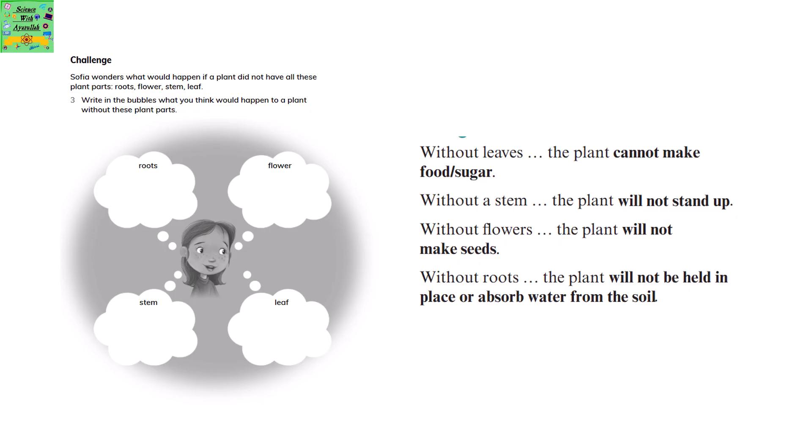Without its leaves, the plant could not make food or sugar. Without its stem, the plant would not be able to stand up. Without flowers, the plant will not be able to make seeds. Without roots, the plant will not be held in place or absorb water from the soil.